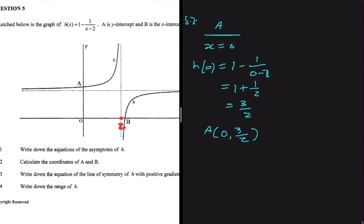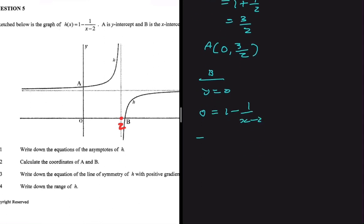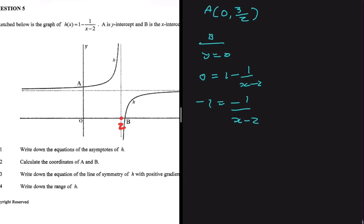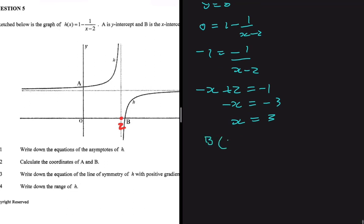Now for the coordinates of B, our x-intercept, where y equals 0. Substituting into H(x): 0 equals 1 minus 1 divided by x minus 2. Rearranging gives minus 1 equals minus 1 divided by x minus 2. Cross multiplying gives minus x plus 2 equals minus 1, so minus x equals minus 3, therefore x equals 3. The coordinates of B are (3, 0).